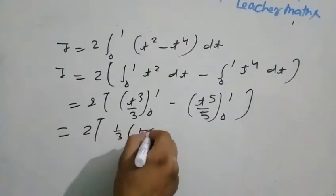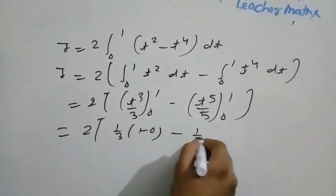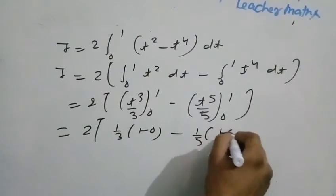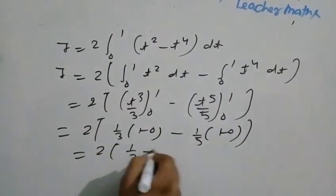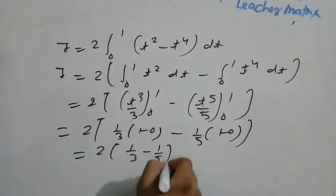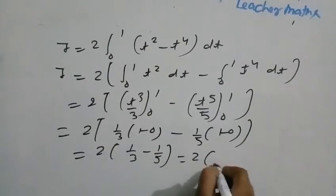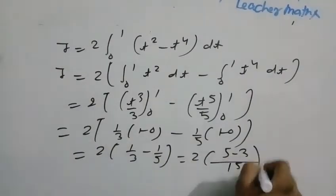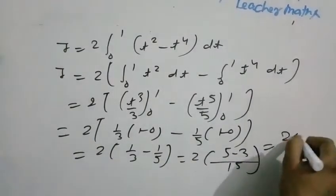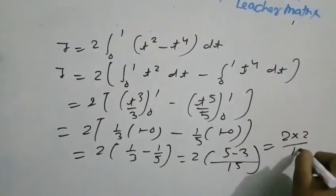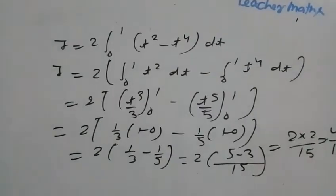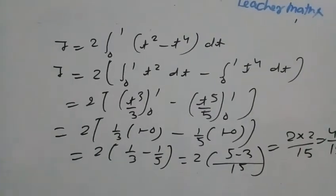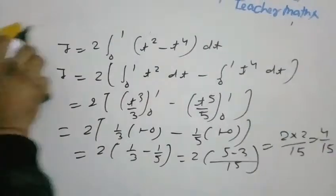Substituting limits: 2 times (1/3 minus 0) minus (1/5 minus 0). That gives 2 times (1/3 minus 1/5). Taking LCM of 15: 2 times (5 minus 3) over 15 equals 2 times 2 by 15. So the answer is 4 upon 15.